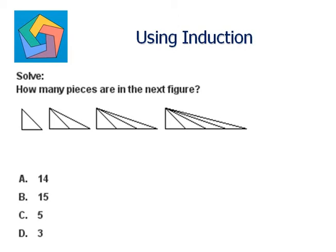So in the first figure, we have one triangle. In the second figure, suppose this is 90 degrees, we have two right triangles. One will be this one and one will be this one. In the third figure, we have 3. In the fourth figure, we have 4.